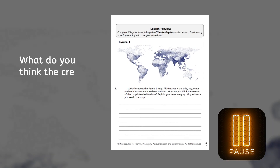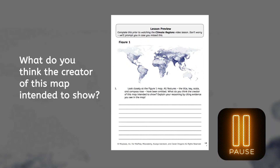If you haven't already completed the preview activity, pause the video here and write a prediction about what you think this map is intended to show on the preview page of your PDF. Make sure to cite some evidence from the map to explain your reasoning.